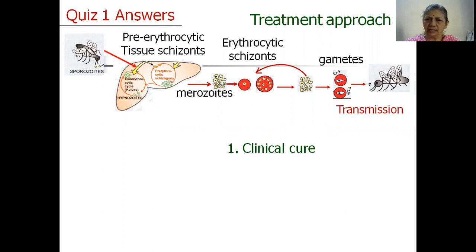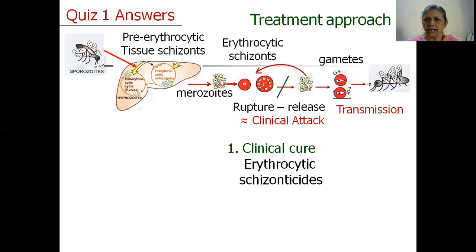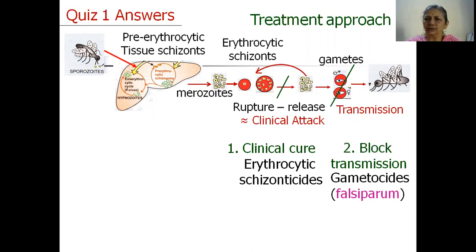The first question was regarding clinical cure, which is the phase of the malarial parasite in the human body corresponding to the clinical attack. We've seen that it is the rupture of RBCs to release merozoites into the bloodstream, which corresponds to the clinical symptoms of rigors and fever. To control the clinical attack we need an erythrocytic schizonticide. To block transmission we need to kill the gametes, and a separate gametocidal agent is required for Plasmodium falciparum, as erythrocytic schizonticides are not able to kill the gametocytes in falciparum.